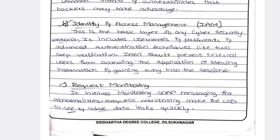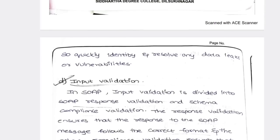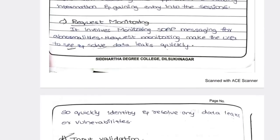Next is request monitoring. If any third-party app is requesting access to your mobile, you need to check whether it is a legitimate app and why it is requesting access. For example, on Facebook, if you get a follow request from someone with unknown profile information, you should not blindly accept it. Whether they are an authorized or legal person — that is what request monitoring checks using SOAP protocol.